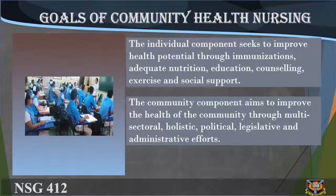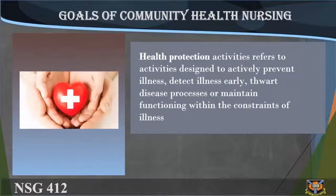The community component aims to improve the health of the community through multi-sectoral, holistic, political, legislative, and administrative efforts, sustained through the maintenance or establishment of health services, healthy working environments, information networks, and self-help programs. Health protection activities refer to activities designed to actively prevent illness, detect illness early, halt disease processes, or maintain functioning within the constraints of illness.